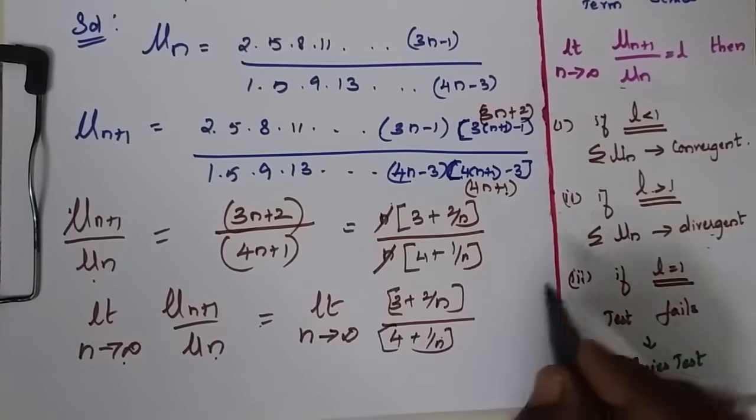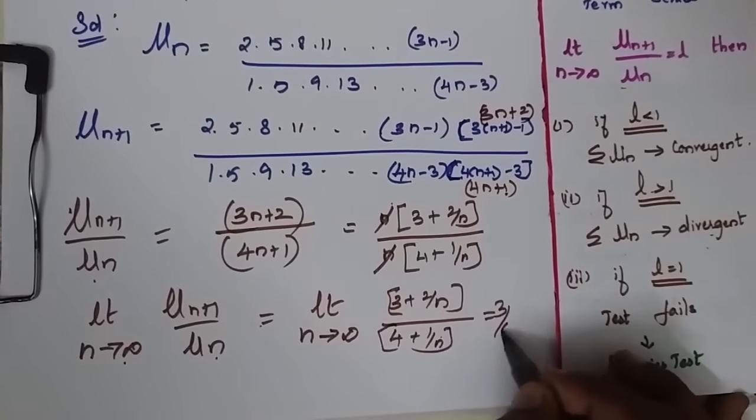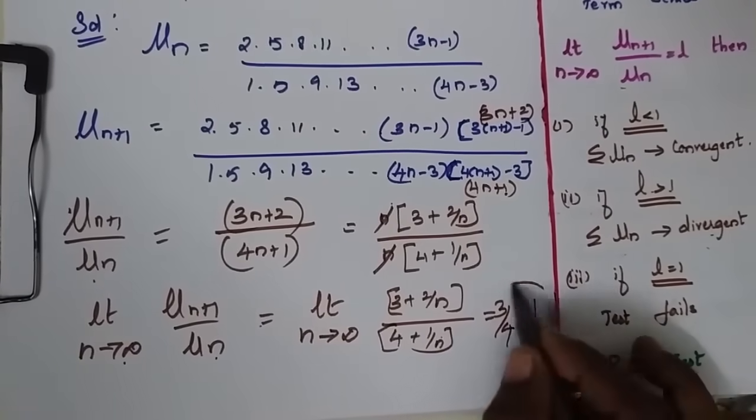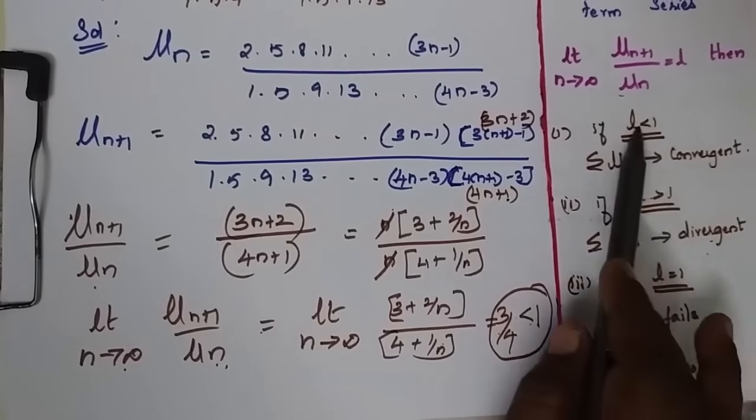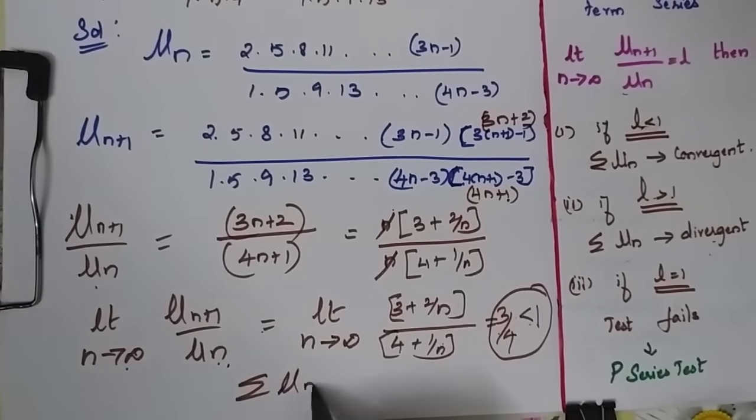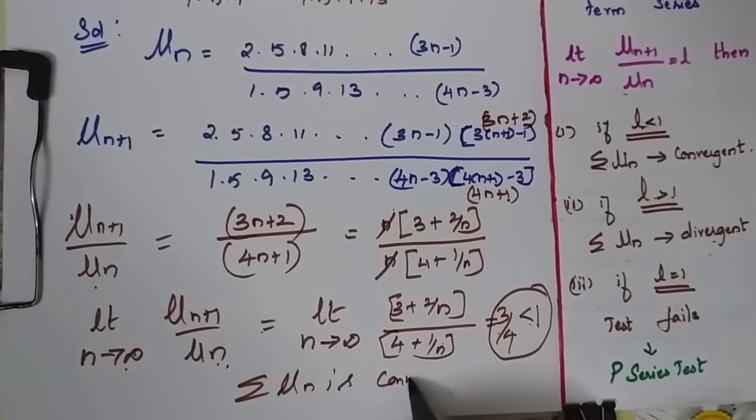This will become 0, this will become 0. And I will have 3 by 4 which is less than 1. So my value is less than 1, therefore my summation un is convergent.